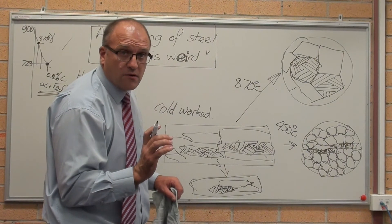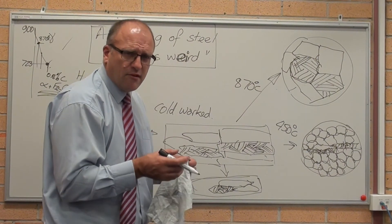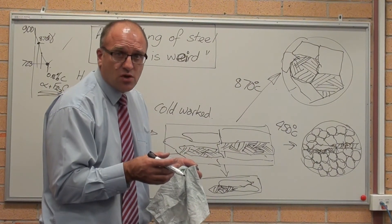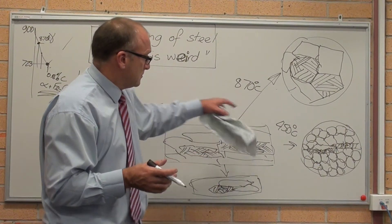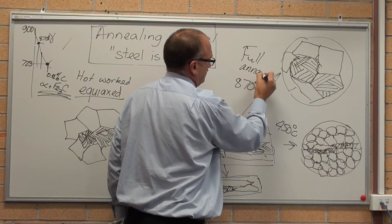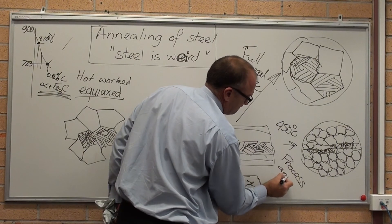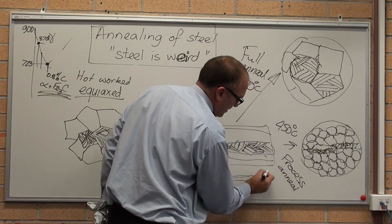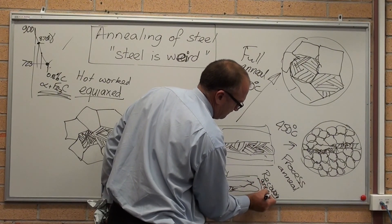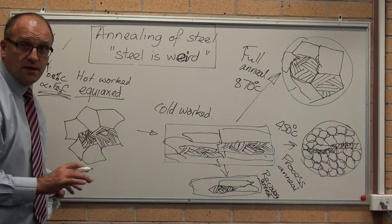In here it's basically still got the same structure — you cannot see the difference with a microscope. You can see a change in the properties. A recovery anneal has just put enough heat into it so everything can get least uncomfortable and stop. Full anneal, process anneal, and a recovery anneal. While we're at annealing, there's the syllabus on annealing.